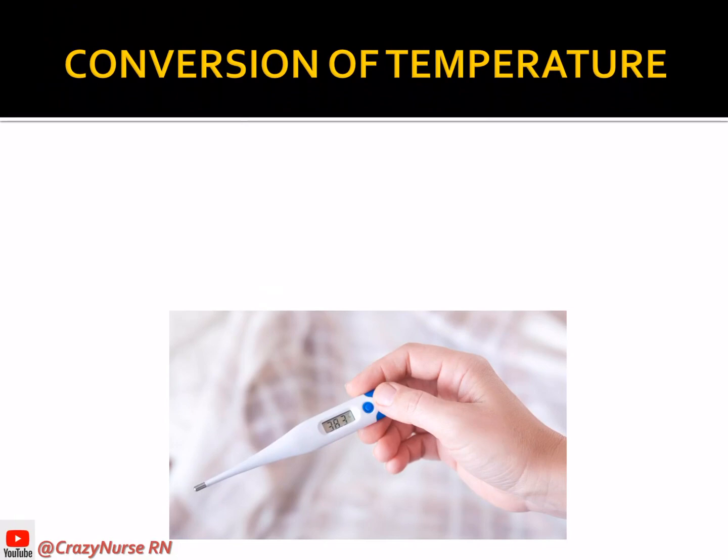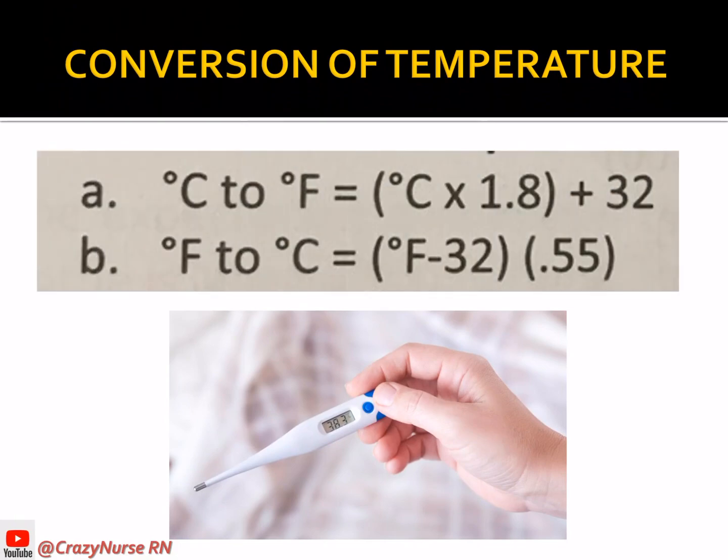For conversion of temperature, we have two methods. To convert degrees Celsius to degrees Fahrenheit: multiply degrees Celsius by 1.8 and add 32. To convert degrees Fahrenheit to degrees Celsius: subtract 32 from degrees Fahrenheit, then multiply by 0.55. Remember those two important formulas.